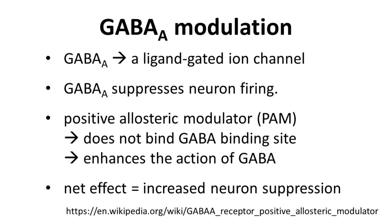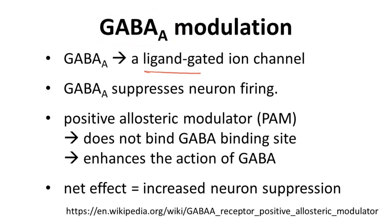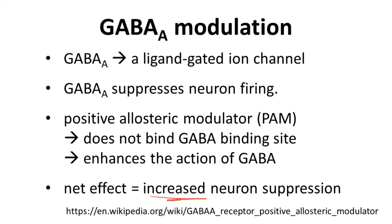So what is xeranilone's mechanism of action? Let's start with xeranilone's target, the GABA-A receptor. The GABA-A receptor is a ligand-gated ion channel. Activation of the GABA receptor suppresses the firing of neurons. As a positive allosteric modulator (PAM), xeranilone does not bind the GABA receptor at the site of its endogenous ligand, but it does enhance the action of GABA-A once activated. So xeranilone is not an agonist for GABA-A, but it does enhance its signal when activated. The net effect of xeranilone is to increase neuron suppression.